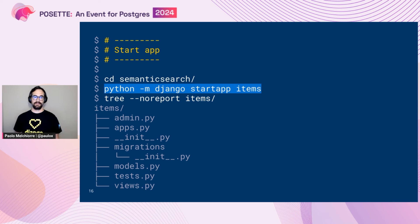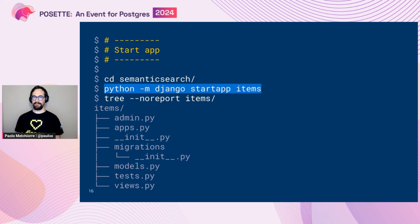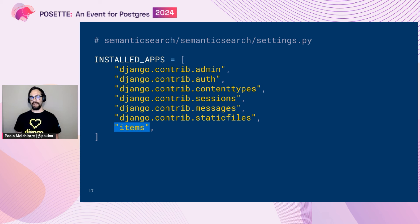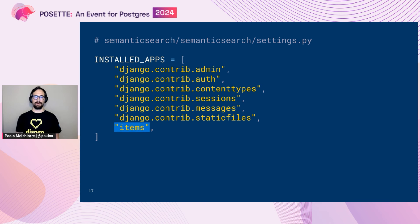You can see all the files that Django created for us — some settings, the URL configuration, and a WSGI handler file. After that, we enter the newly created directory and start a new app. I decided to create an app called 'news_themes', and Django created all the necessary files for us: models, views, tests, and also the admin. Now we can add this newly created app to the settings in the list of installed apps.